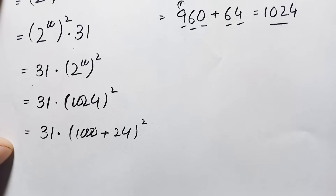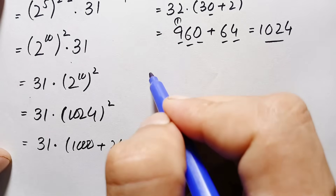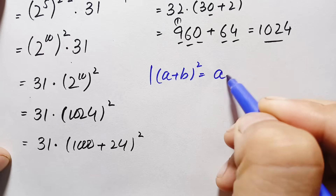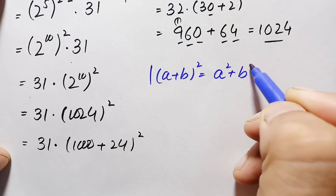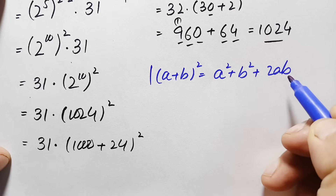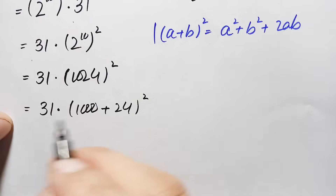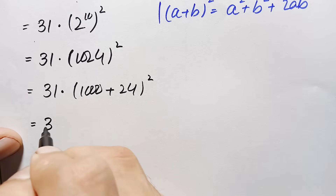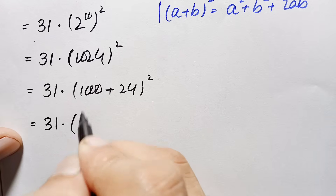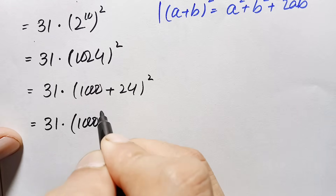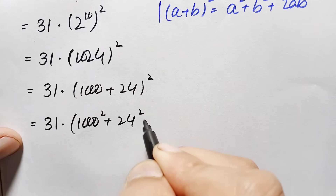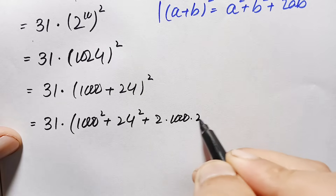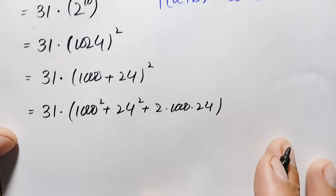We will find this value using the a plus b whole squared identity, which equals a squared plus b squared plus 2 times a times b. Here a is 1000 and b is 24. So the expression becomes 31 times 1000 squared plus 24 squared plus 2 times 1000 times 24.